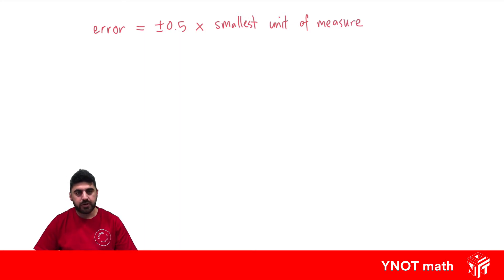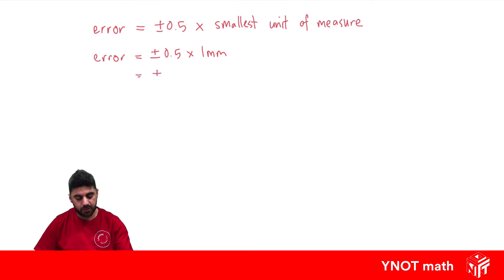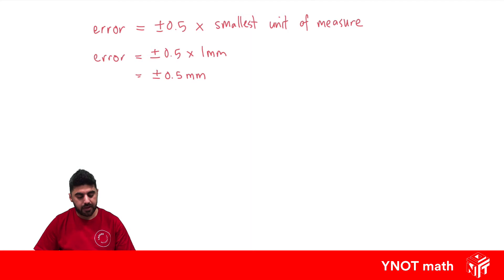If you're measuring something with a 30cm ruler that shows accuracy to 1mm, the smallest unit of measure on that ruler is 1mm. So your error would be plus or minus 0.5 times 1mm. 0.5 times 1 is just 0.5, so you get plus or minus 0.5mm. This means you could expect to be off by 0.5mm either way of your measurement with that ruler.